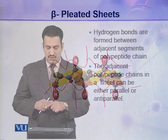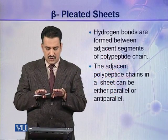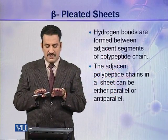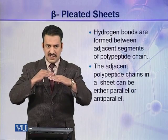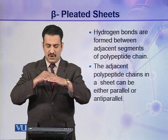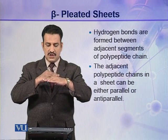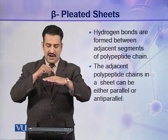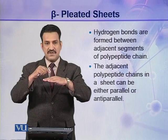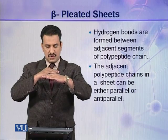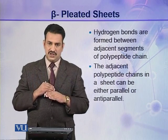Hydrogen bonds are formed between adjacent segments of polypeptide chains. When two zigzag polypeptide chains come close to each other, hydrogen bonds are formed between different segments of these two polypeptide chains.